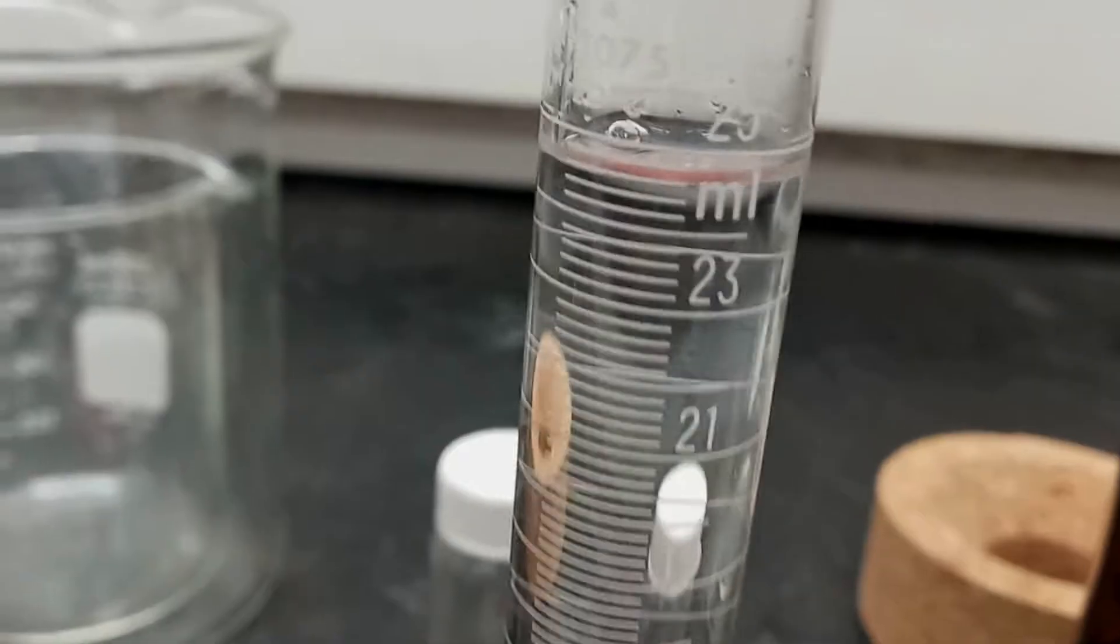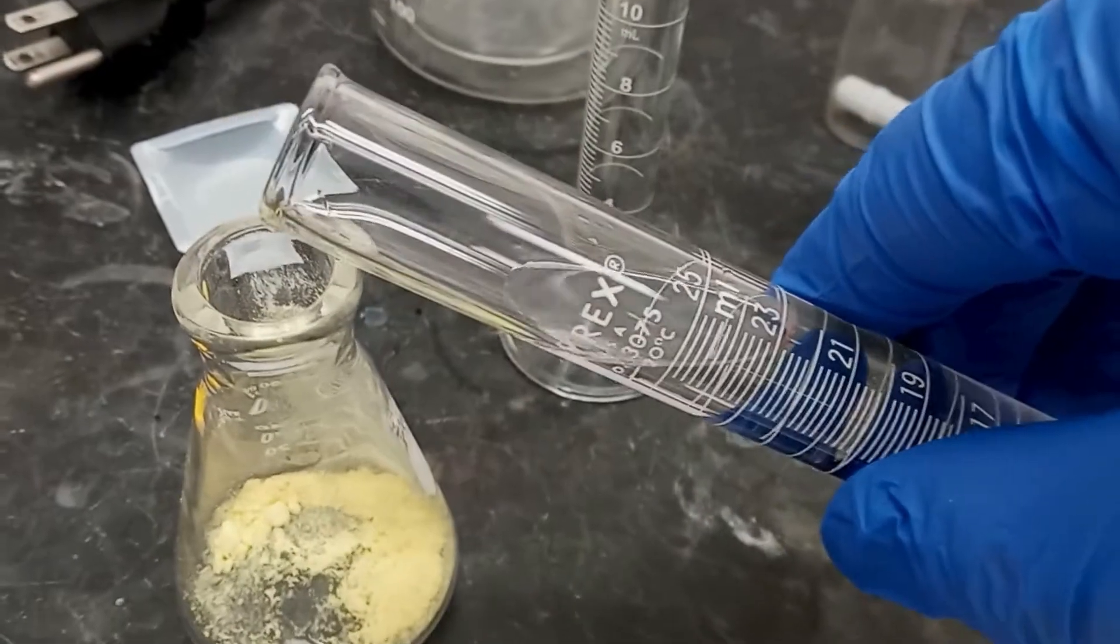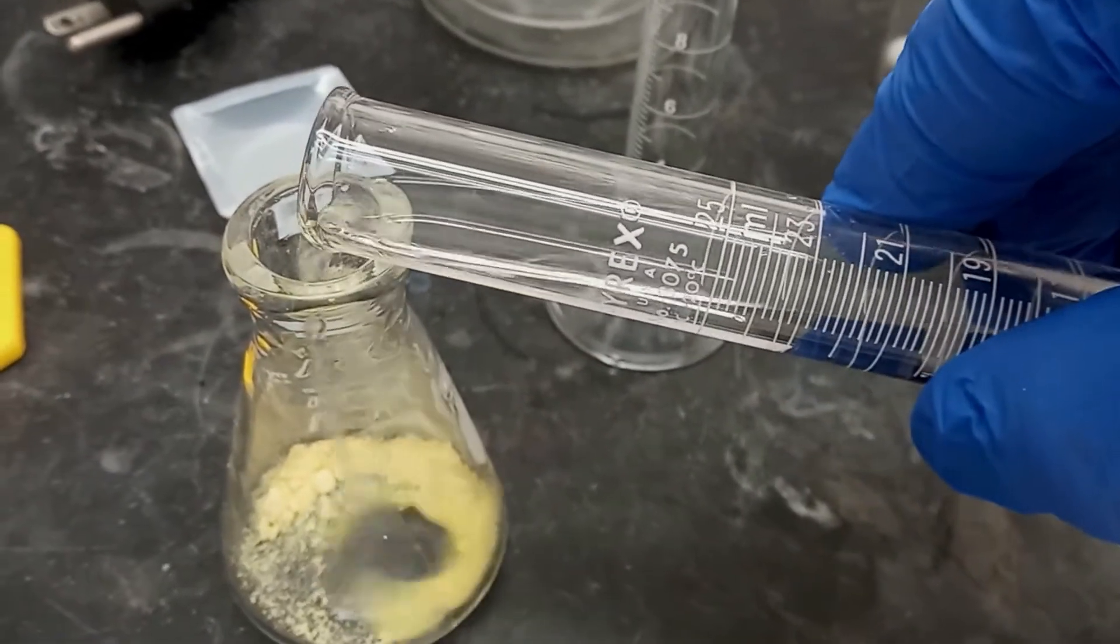To do this, we measured out 25 ml of dichloromethane in a graduated cylinder and used it to dissolve the hydrous 2,4-dinitrophenyl.